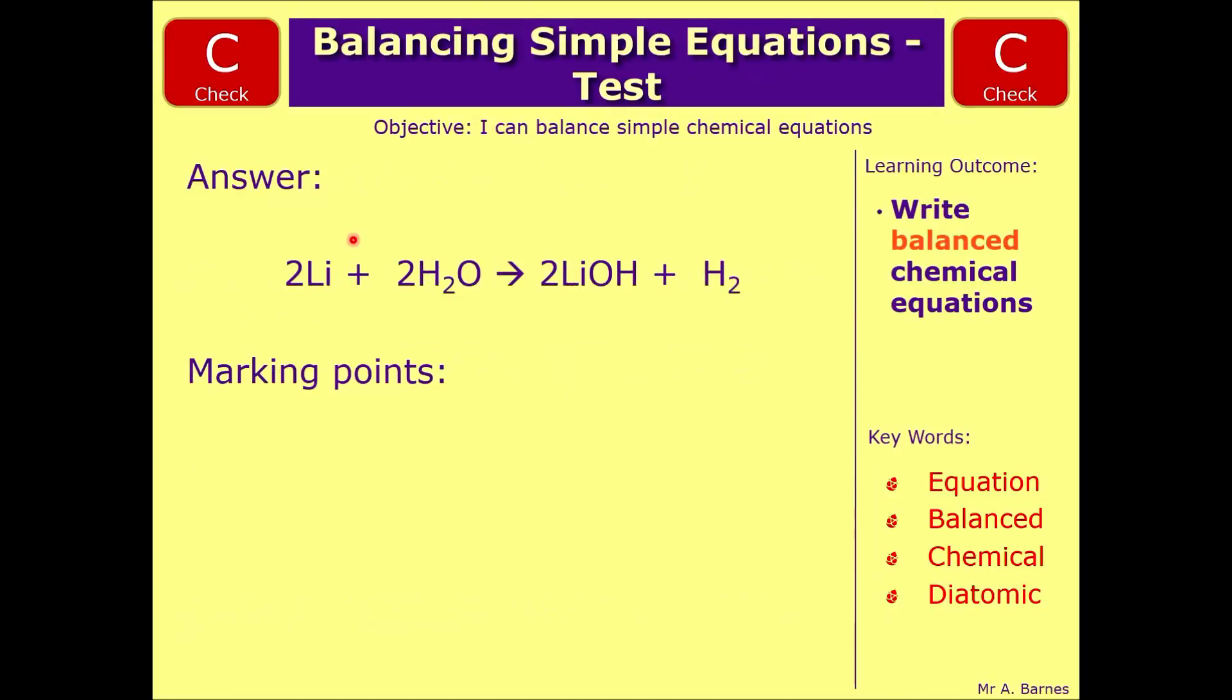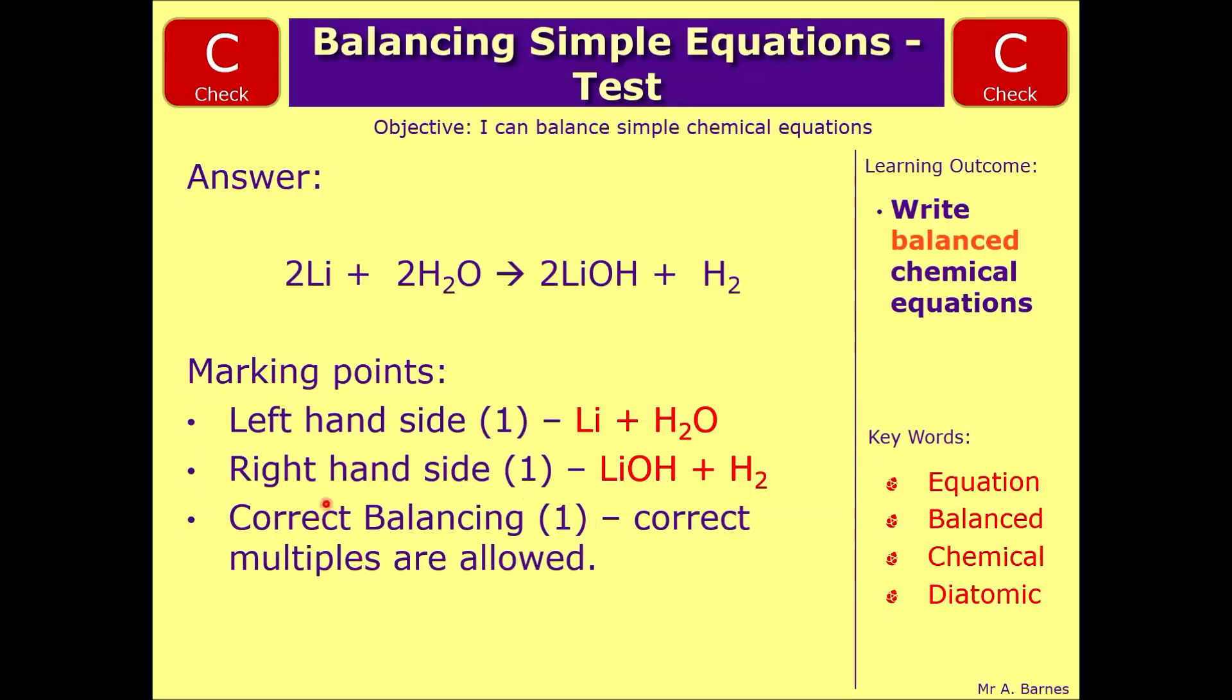And there's your answer. So if we have a look at the mark scheme, the first marking point is just for the left hand side, so picking out that Li plus H2O. On the right hand side is the second mark, so LiOH plus H2, and then you get the third mark for correctly balancing, which is what we've just done, noting that it'll also allow correct multiples like the one that I've drawn below.